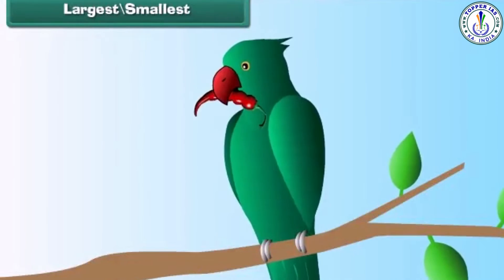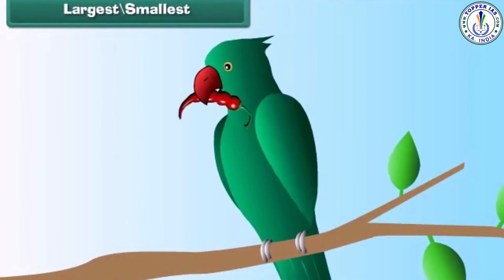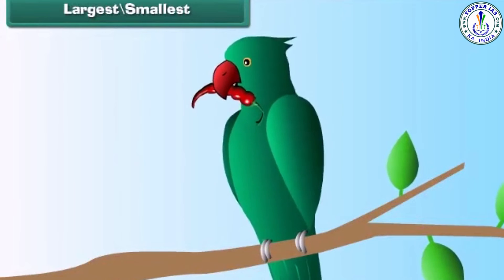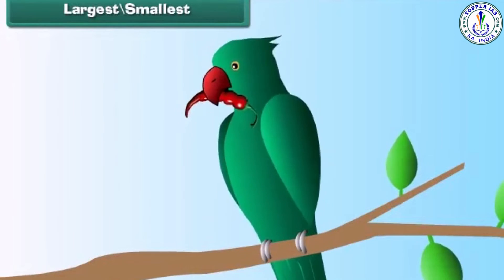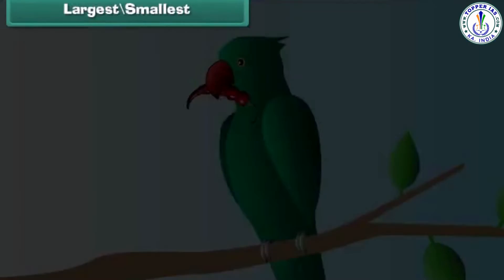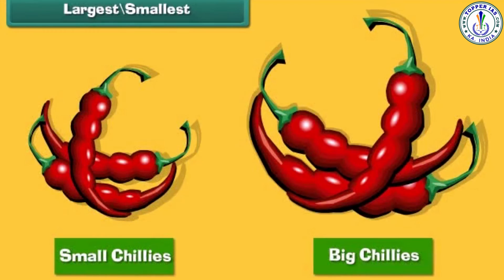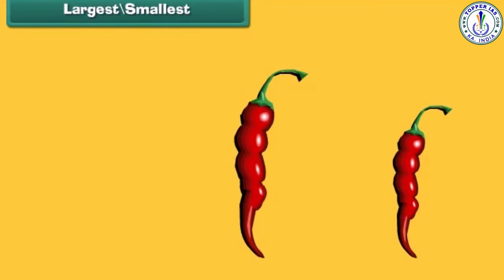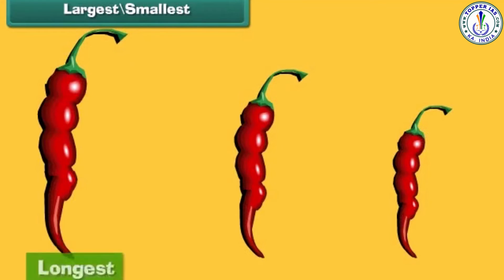Remember the red chilies a parrot eats? There are small chilies and big chilies. Among three chilies, the first is the longest and the third is the smallest.